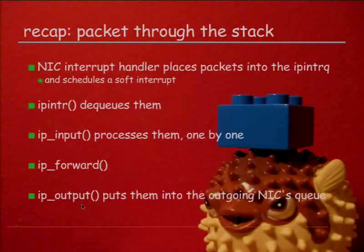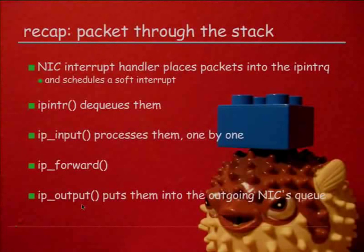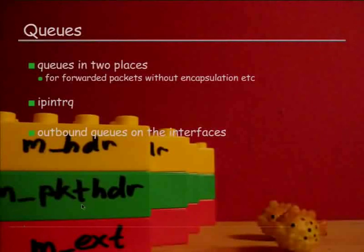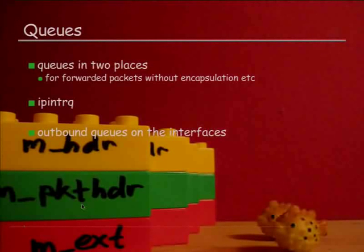Assuming a forwarded packet as usual, it goes on to IP forward, which does all the route lookup magic. And eventually we end up in IP output. There we have the second set of queues we care about: it puts the packet into the queues for the next hop where we are going to send it out. These are the two queues we really care about — the IP inter queue on the input side and the outbound queues on the interfaces.